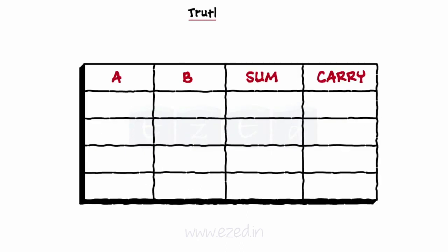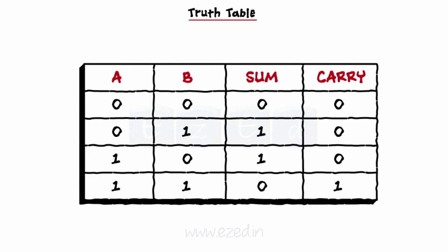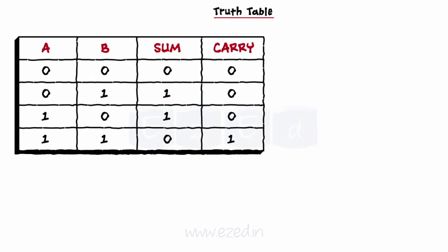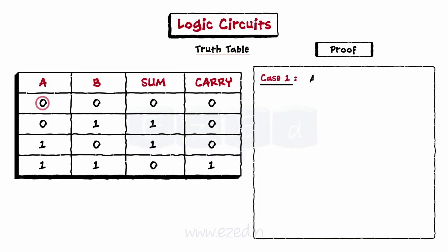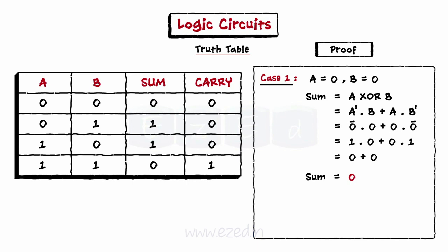We can represent the truth table of the half adder as follows, by considering the different combinations of inputs. We will only prove two cases for simplicity. Consider case 1 where input A equals 0 and input B equals 0. Thus, we get sum equals A'B plus AB', which comes out to be equal to 0. Similarly, the carry equals A dot B equals 0 dot 0 equals 0. The result matches with the truth table.